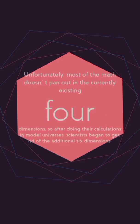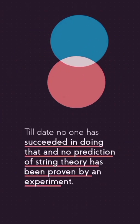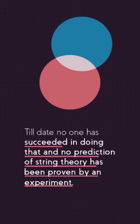So after doing their calculations in model universes, scientists began to get rid of the additional six dimensions. Till date, no one has succeeded in doing that and no prediction of string theory has been proven by experiment.